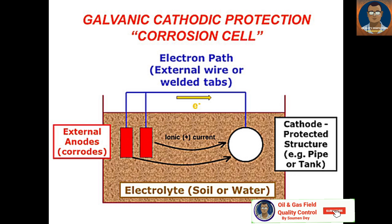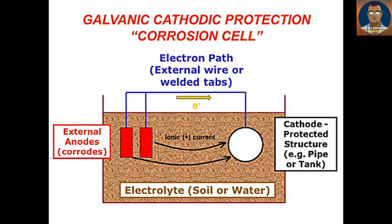The electrochemist, rather than the engineer, will describe precisely the same process as the anodic area losing ions to the electrolyte — that is metal loss or corrosion — and electrons to the metal. The process is the same; it is just that by convention the direction of current and ion flow are opposite. Electron flow is opposite to ion flow in electrochemical corrosion.